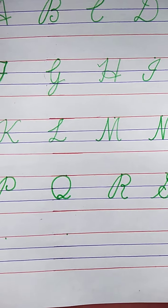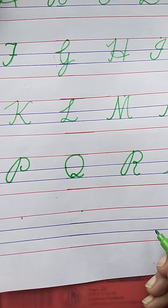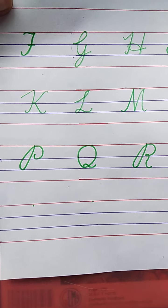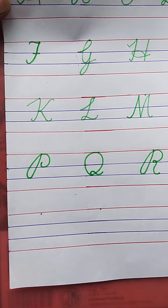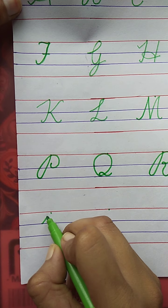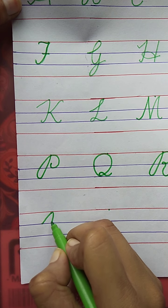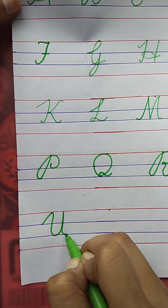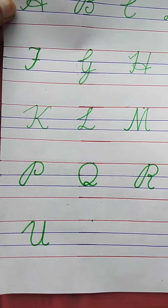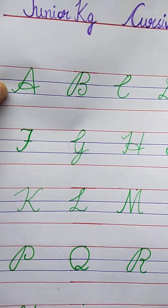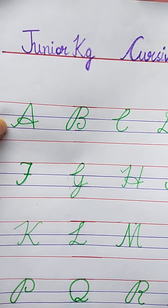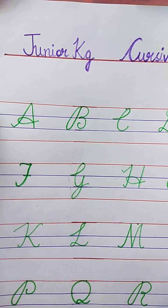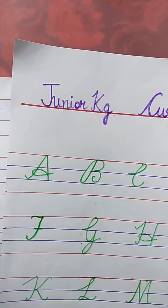Now, tell me the next letter. Very good. U. U for Umbrella. See here. Draw with me. U for Umbrella. The spelling of Umbrella is U-M-B-R-E-L-L-A. Umbrella.